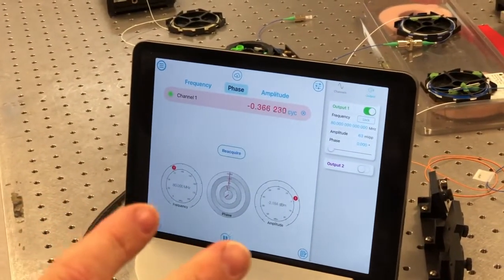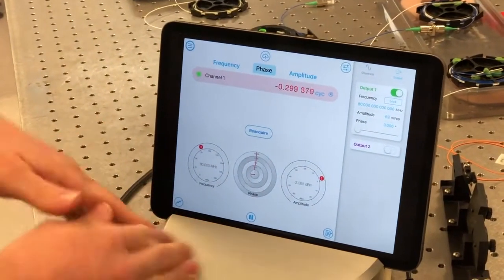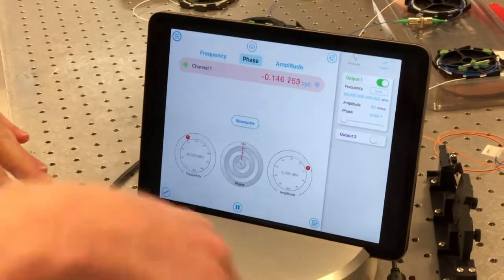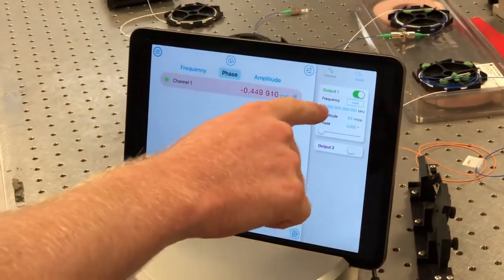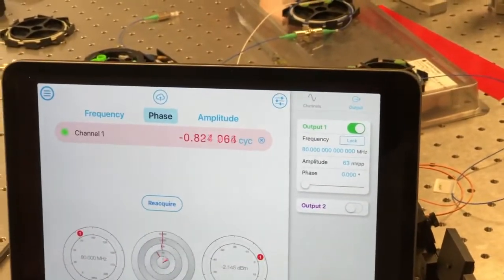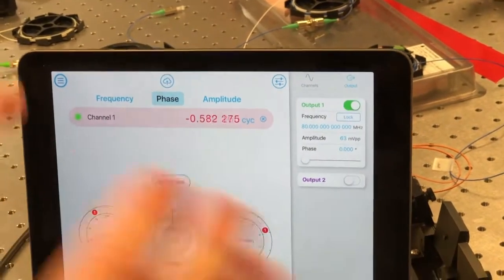Now, the thing that I should reiterate is that with all of these instruments that I've shown you, they can both measure on the inputs and synthesize tones on the outputs. From the phase meter, what I'm now doing is driving the AOM at 80 megahertz, and then I'm going to look at the interference of the interferometer on the inputs, and then observe the phase.